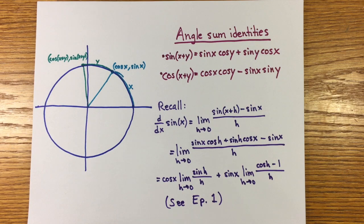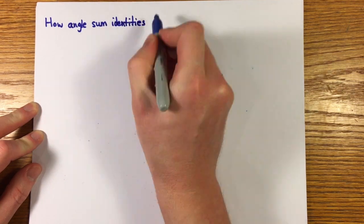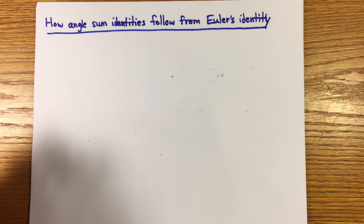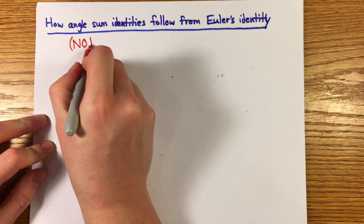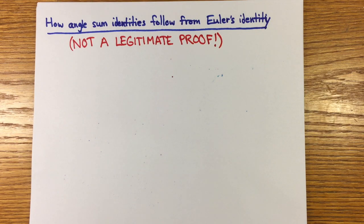I can't tell you how many times I have seen calculus instructors and YouTube lecturers purport to derive the angle sum identities for sine and cosine by using the famous Euler's identity and properties of the exponential. Here, I'll show you how the derivation works, but keep in mind I don't consider this to be a legitimate proof of the angle sum identities.